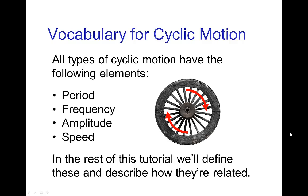There's some vocabulary that's good to understand when it comes to cyclic motion. The following terms: period, frequency, amplitude, and speed. Let's take a few minutes to define these and explain the relationship between these four elements.